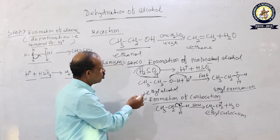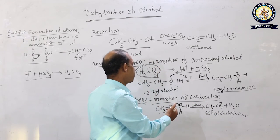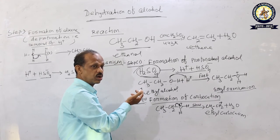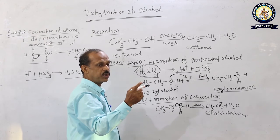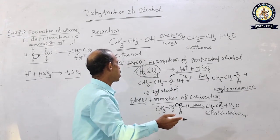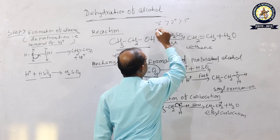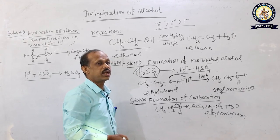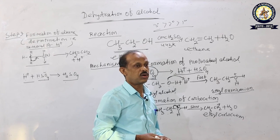Remember: when a carbocation forms in step two, secondary alcohol gives a secondary carbocation and tertiary alcohol gives a tertiary carbocation. Tertiary carbocations are more stable than secondary, which are more stable than primary. Therefore, the reactivity order for dehydration is tertiary alcohol > secondary alcohol > primary alcohol. In the next video we will discuss the oxidation of alcohol.